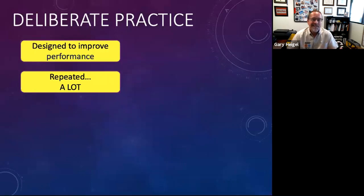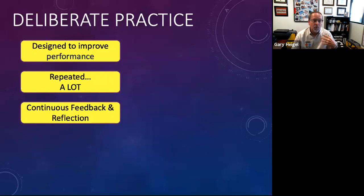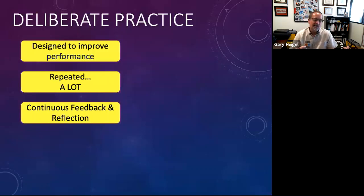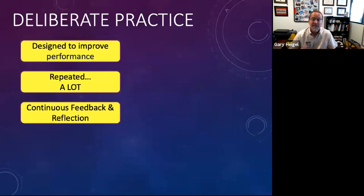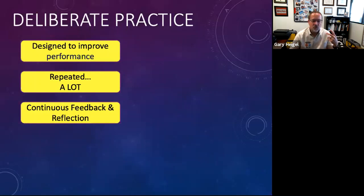The key for deliberate or purposeful practice is that there has to be feedback and a reflection process. The student needs to think about what they're doing, figure out if it's working, adjust accordingly, and practice more. A lot of times they need outside feedback — an expert opinion pointing out where they need to fine-tune. Another key concept is spaced repetition: it's more effective to do small chunks of practice with breaks in between than big chunks of rote practice.